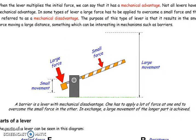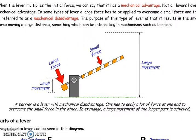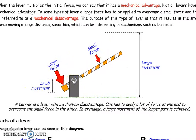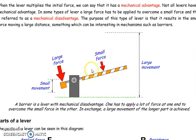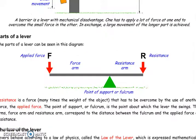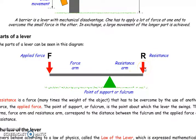This is another example of a lever. This is the bar, the fulcrum, one force, and another force. So, in a lever, we can always distinguish three elements: the point of support called fulcrum, the force that we apply, and the resistance that we want to overcome.